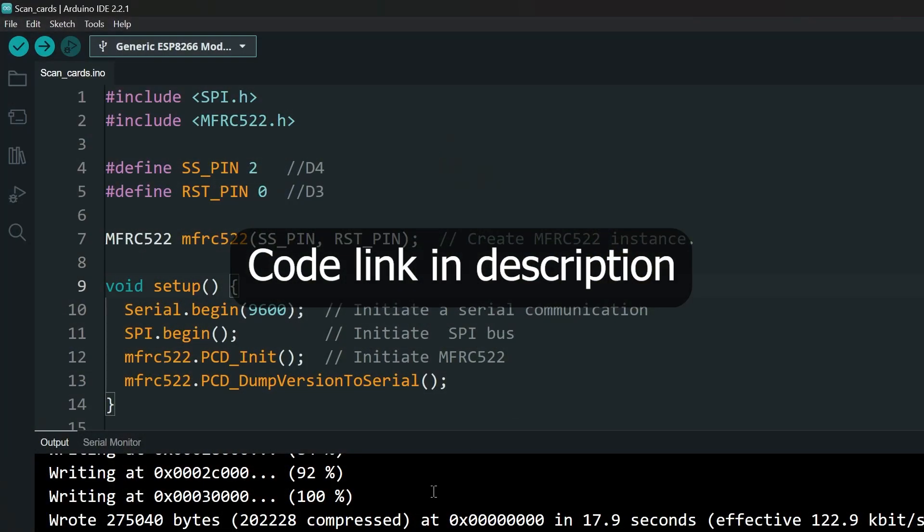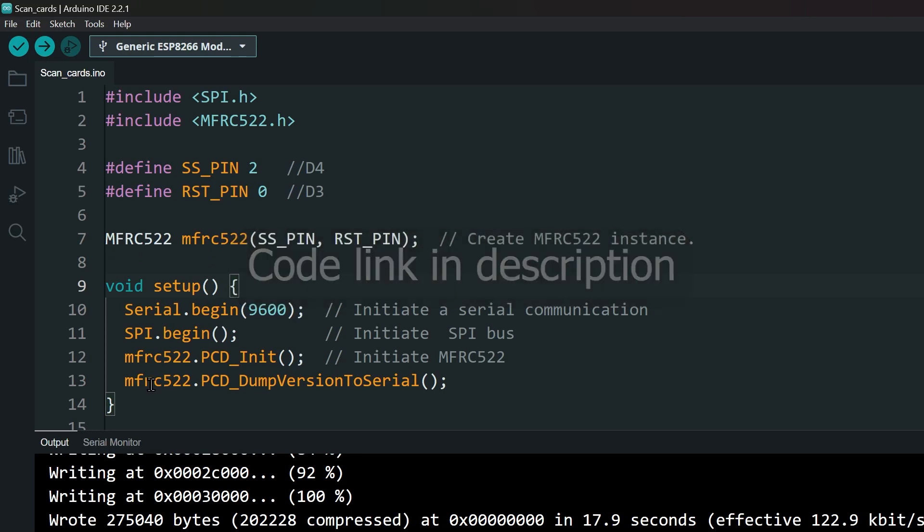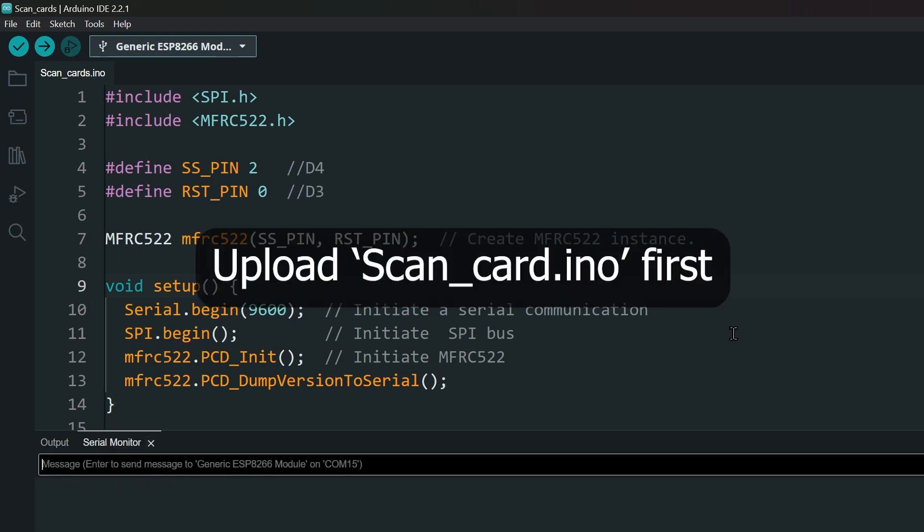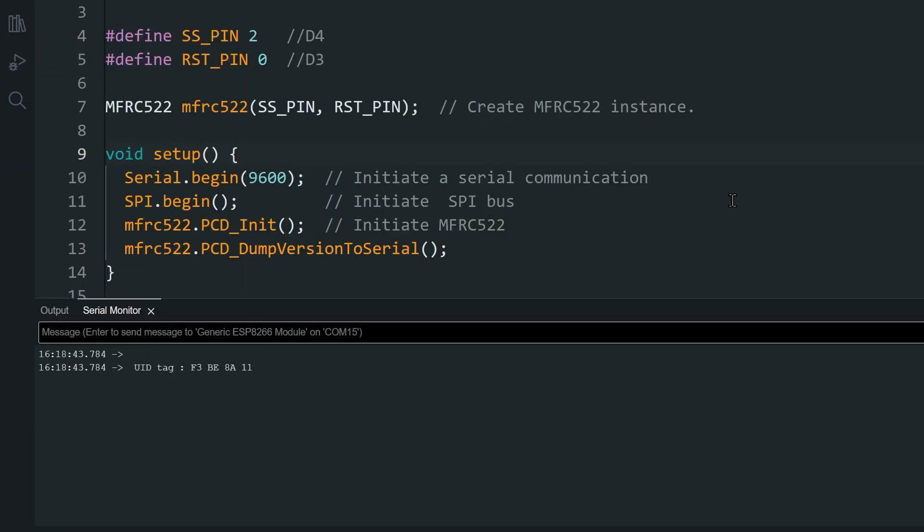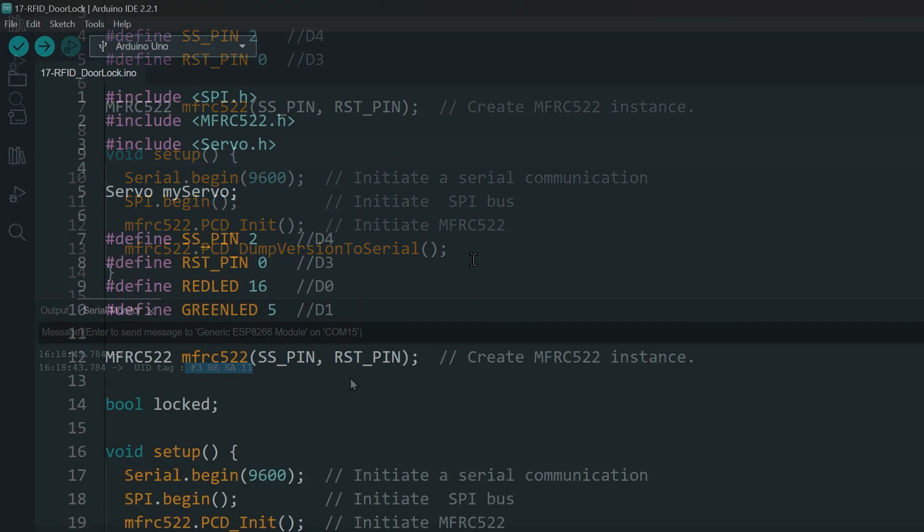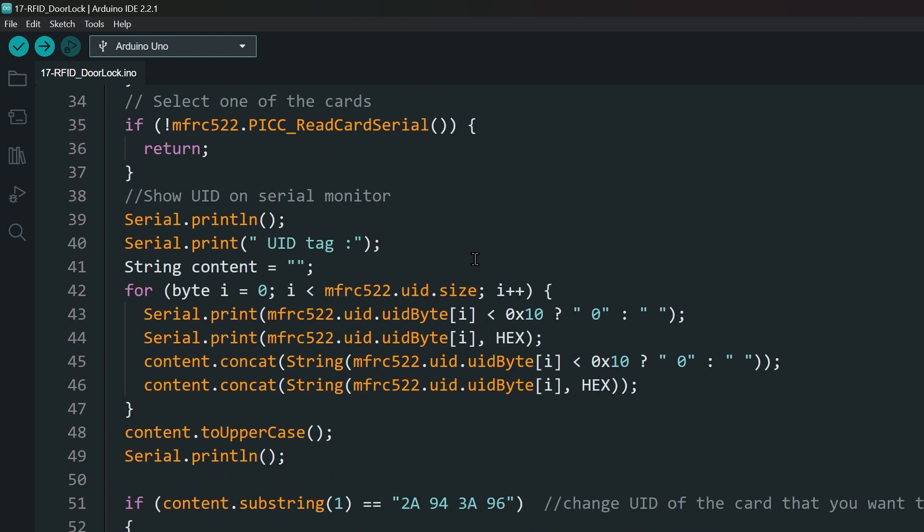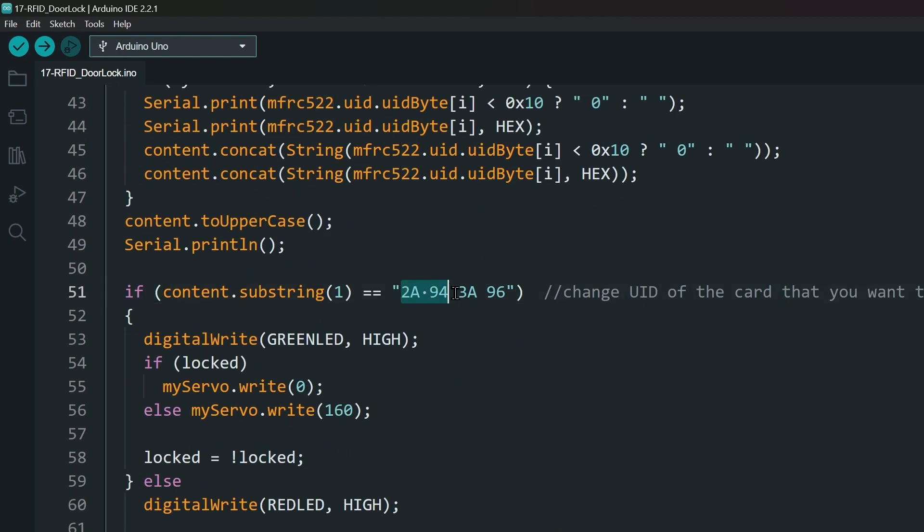Download and open the code from the description. In that, use the scanning only code to get the ID of your card. Upload that code and scan a card to get the ID of that card in the serial monitor. Then replace that in the main project file and upload it before making the connections.